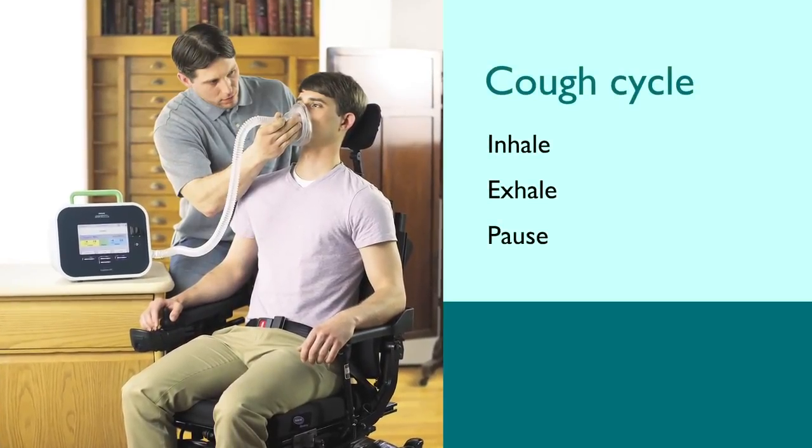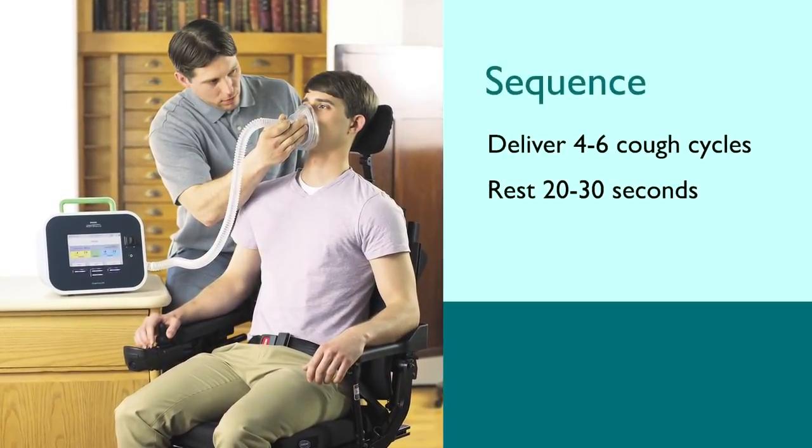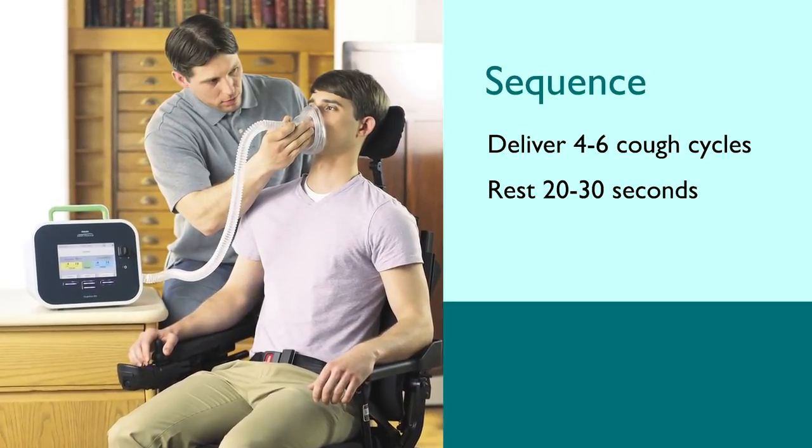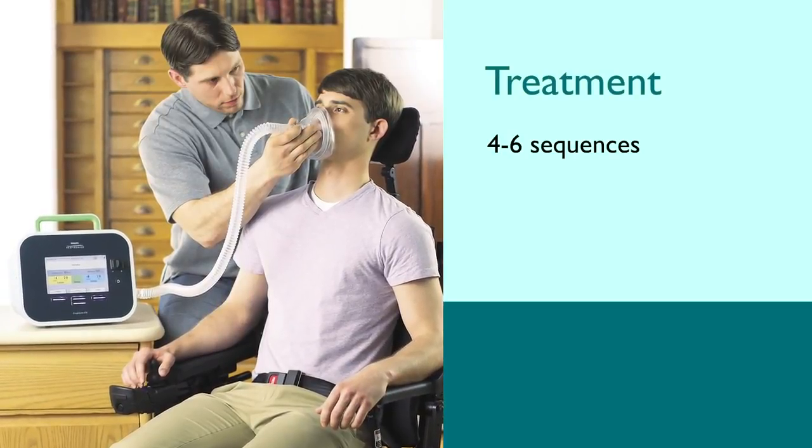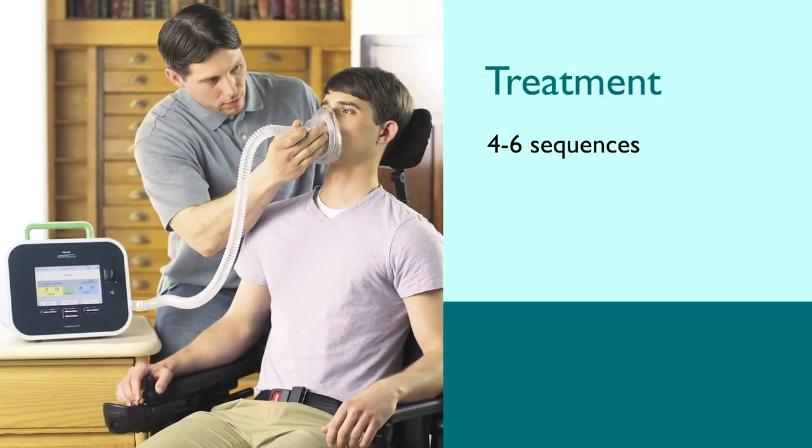A cough cycle is defined as inhale plus exhale plus pause time. Deliver four to six cough cycles in rapid succession followed by a rest period of 20 to 30 seconds. Repeat this sequence, four to six cough cycles and rest period, four to six times for a complete treatment.